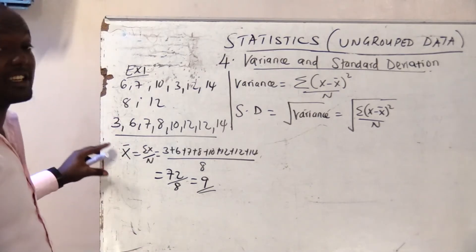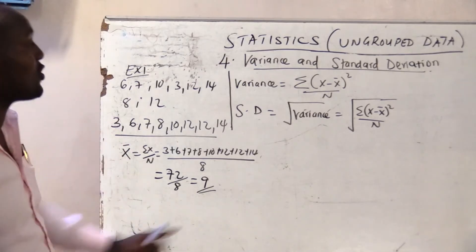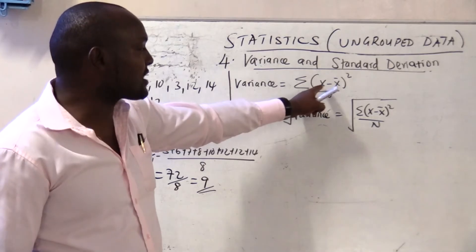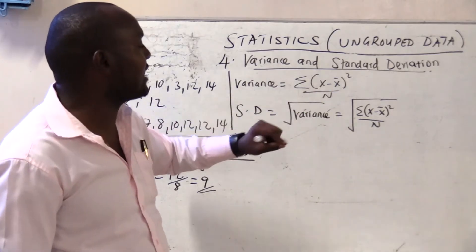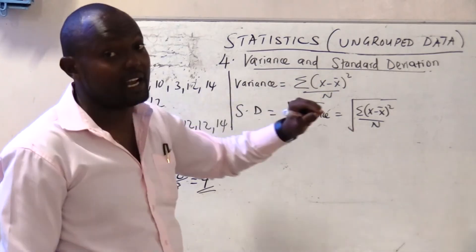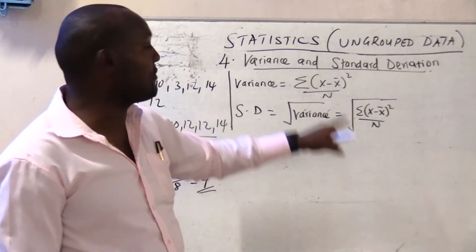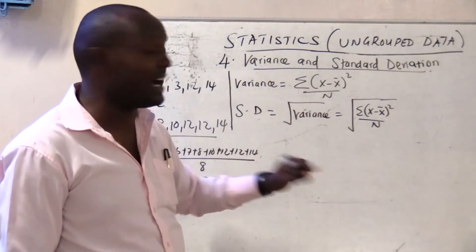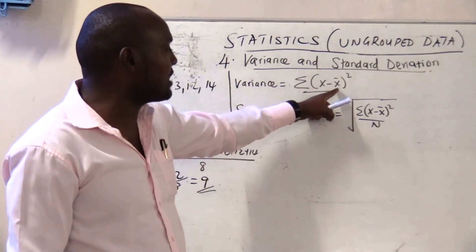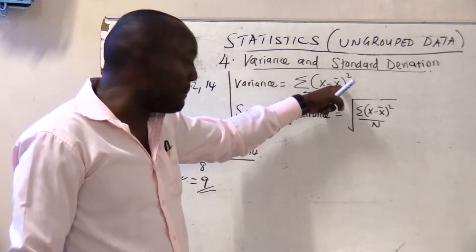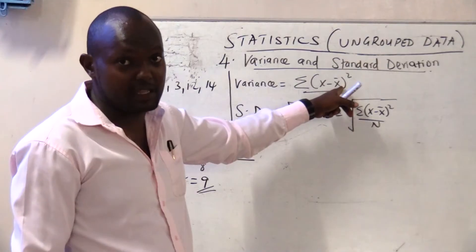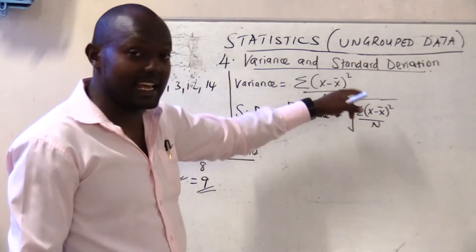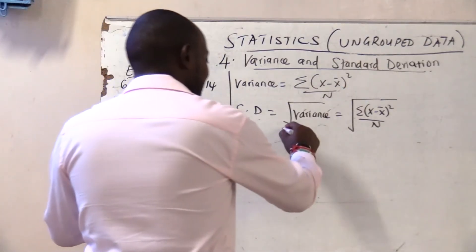The reason why I'm calculating the mean again is because we need it. Our formula guides us — we need the arithmetic mean, and we need x minus x-bar. So I need to arrange my data accordingly.